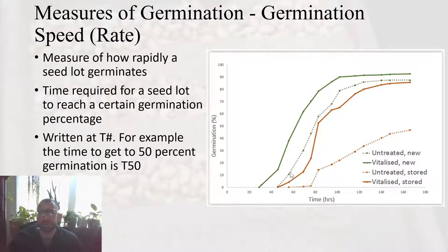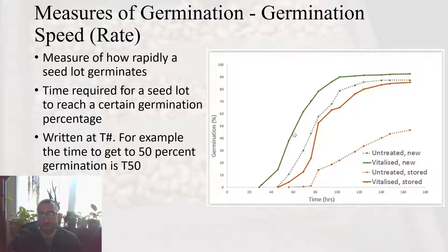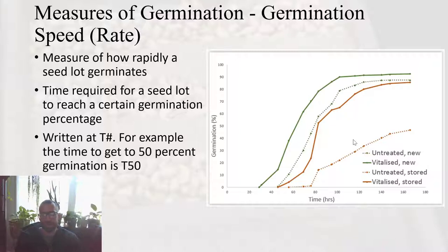In this hypothetical example with a couple of different treatments plotted on a graph, the time to get to T50 — looking at a germination percentage of 50% — you go across and see how long it took for each treatment. In this case it looks like about 50 hours. You can graph this data or have a table showing how long it took for each seedlot by day or hour, and eventually determine your germination speed.